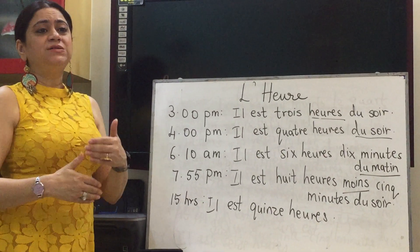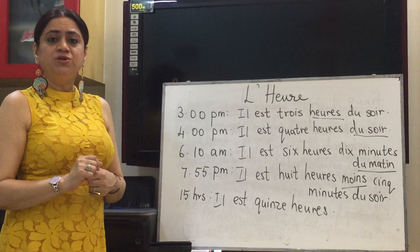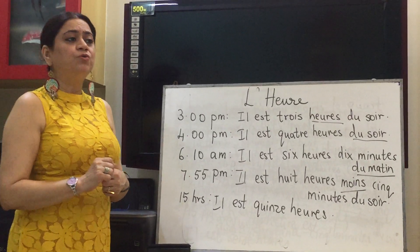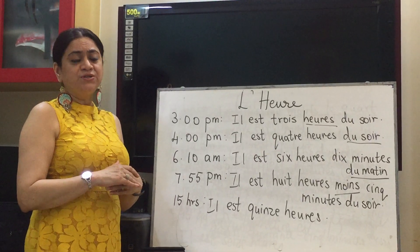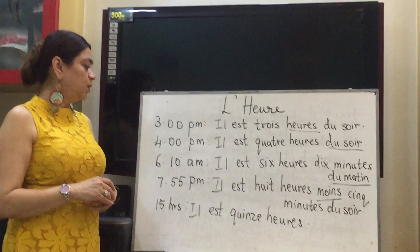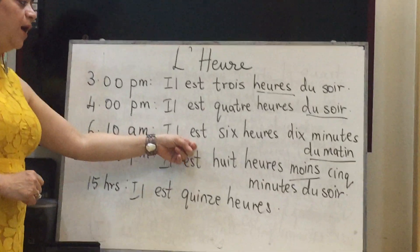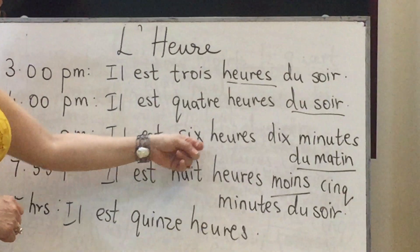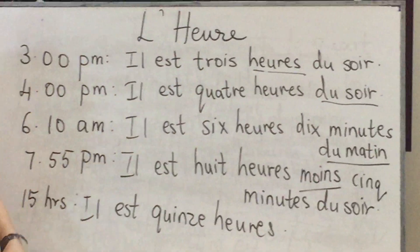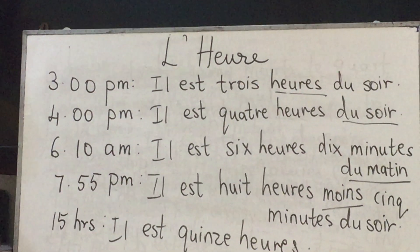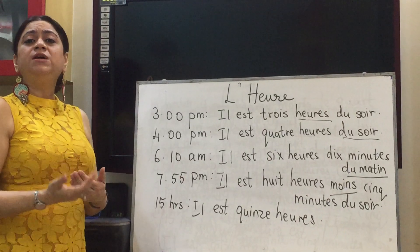The word 'minutes' is optional — so if you want to write it you can, or you can just omit it altogether. For example, 6:10 A.M. is written as 'il est six heures dix minutes du matin' — ten hours, ten minutes.